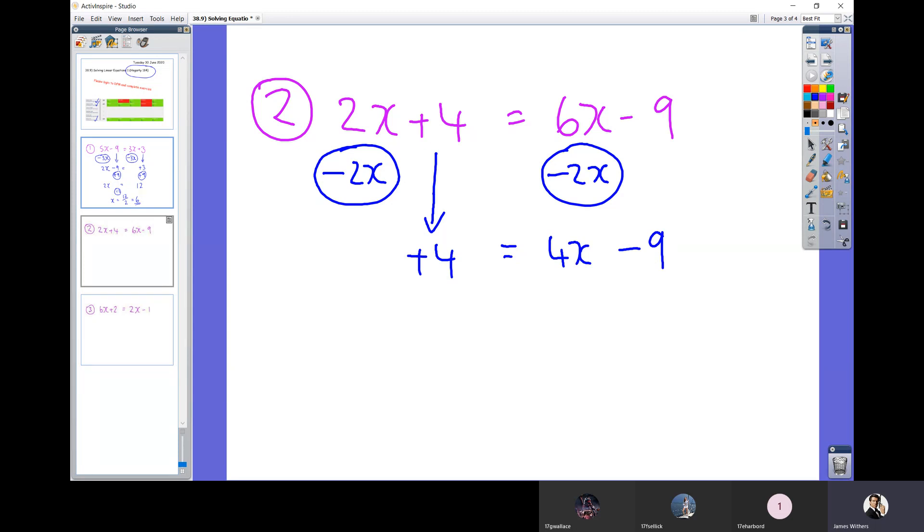So on this question, all our x's are on the right, so all our normal numbers need to be on the left. So the plus 4 is on the correct side. The minus 9 has to be undone. How do we undo a minus 9? We add 9 to both sides. So 9 and 4 is 13, equaling 4x. So nearly there. So 4x equals 13. So just be careful. How do we undo a timesing by 4? We divide by 4.